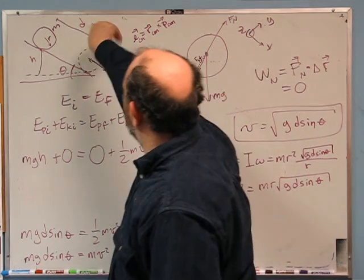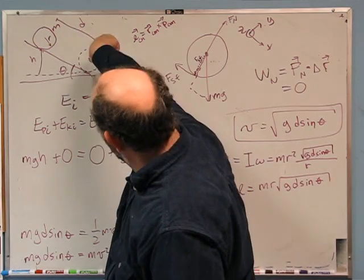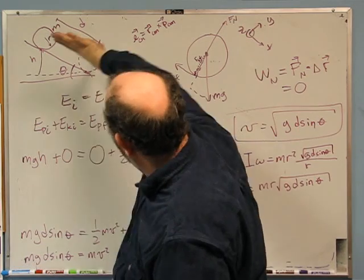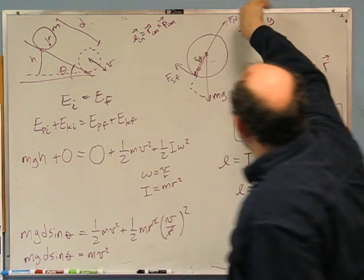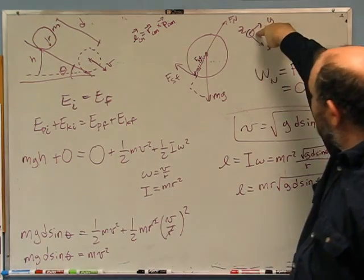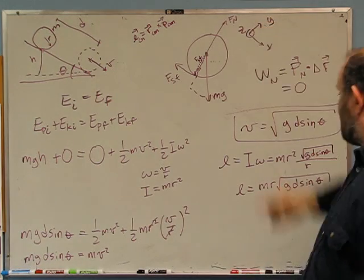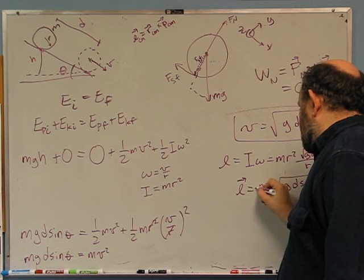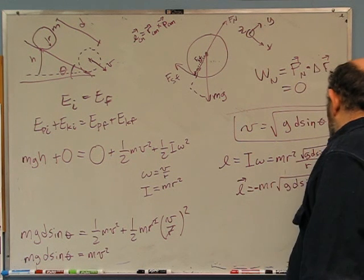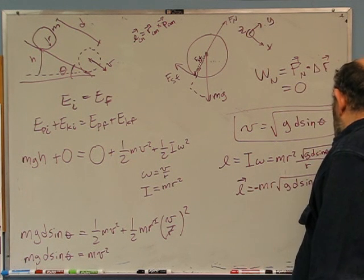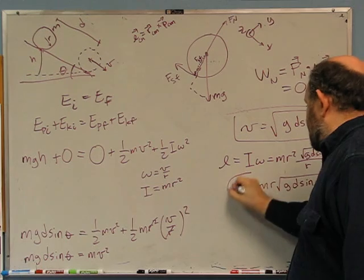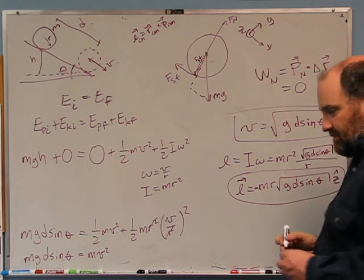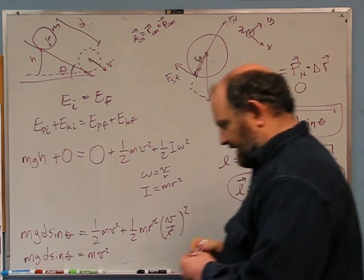Now the direction: we know it's rolling that way to go down the hill, so it's rolling into the board, which is opposite z. So the angular momentum is minus mr times the square root of g d sin theta, in the negative z-hat direction. Now we know the angular momentum of this wheel.